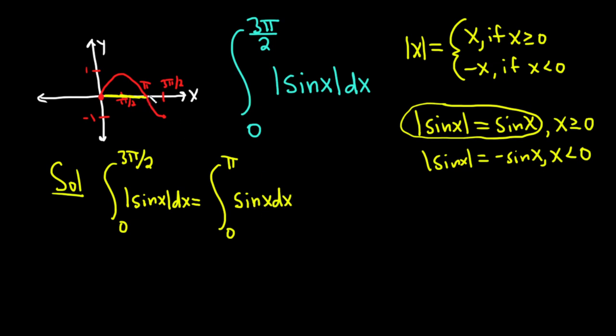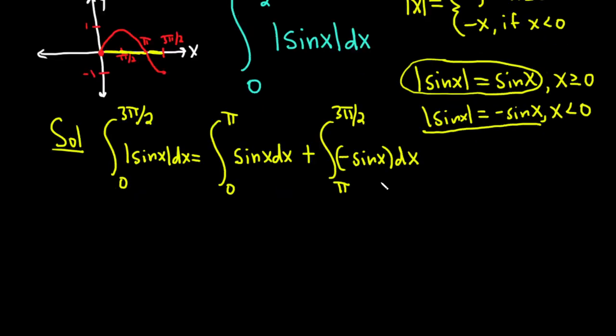And then from pi to 3 pi over 2 it's going to be negative. So the absolute value of sine x is negative sine x. This is plus pi to 3 pi over 2. So in this case it's minus sine x. And we have a parenthesis here and a dx. Alright, now we can finish up.